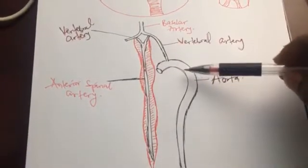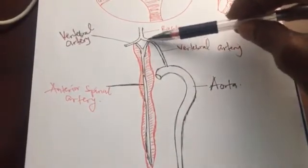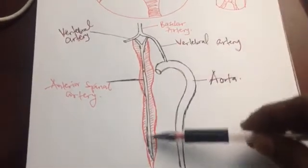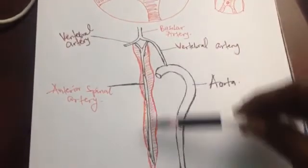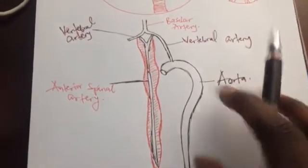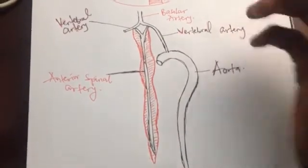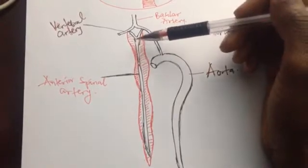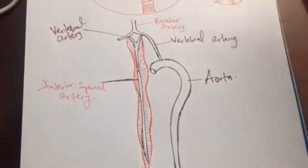Since the artery is occluded, blood can no longer run down to the spinal cord. So symptoms will only manifest below the lesion — all these areas will suffer from ischemia at and below the level of the lesion. One important thing to also remember is that the anterior spinal artery supplies the anterior two-thirds of the spinal cord, while the posterior one-third is supplied by the posterior spinal artery.